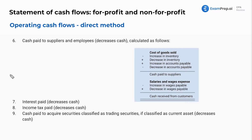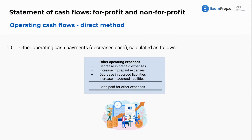All of these items will be accounted for in the direct method. This is still just a good overview — we have a lot more to talk about, and the best way is with examples and practice questions. And then lastly, cash paid for other expenses — other operating cash payments that decrease cash.